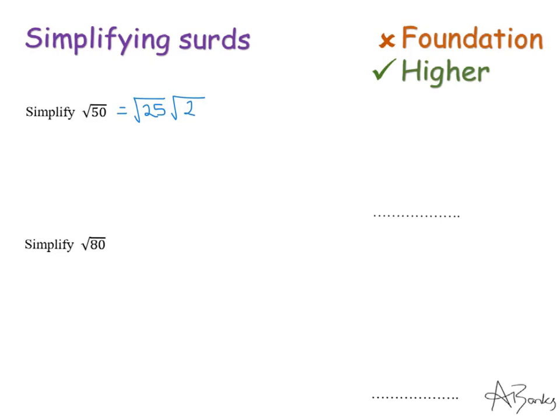So that is the same as root 50. Now I've split it up because I've got a square number in one of my roots. So I've got root 25. I know what root 25 is. The square root of 25 is 5. So I can simplify this by writing root 25 is just 5 and then my root 2. And that's it. This is that question done. It's 5 root 2.